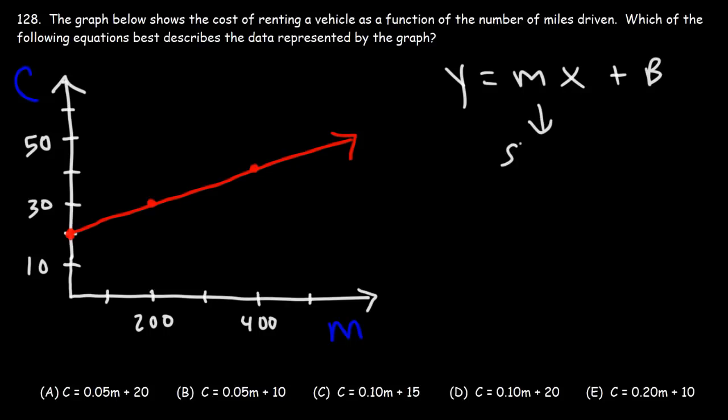m is the slope, b is the y-intercept. The y-intercept is where the graph touches the y-axis. In this case, that's going to be 20.